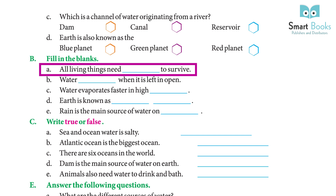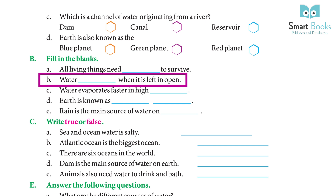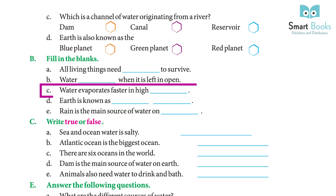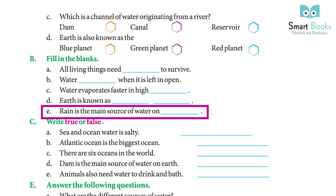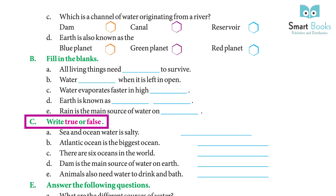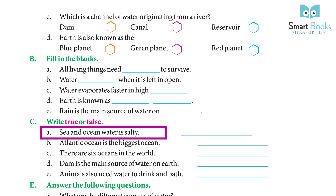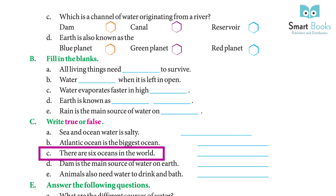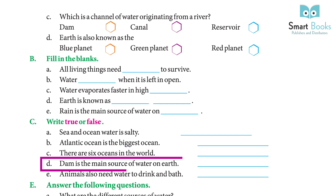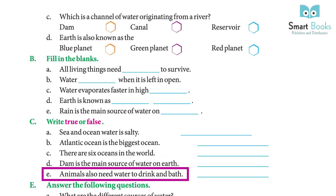Fill in the blanks: (a) All living things need water to survive. (b) Water evaporates faster when it is left in the open. (c) Water evaporates faster in high temperature. (d) Earth is known as the blue planet. (e) Rain is the main source of water on Earth. True or False: (a) Ocean water is salty — True. (b) Atlantic Ocean is the biggest ocean — False. (c) There are six oceans in the world — False. (d) A dam is the main source of water on Earth — False. (e) Animals also need water to drink and bathe — True.